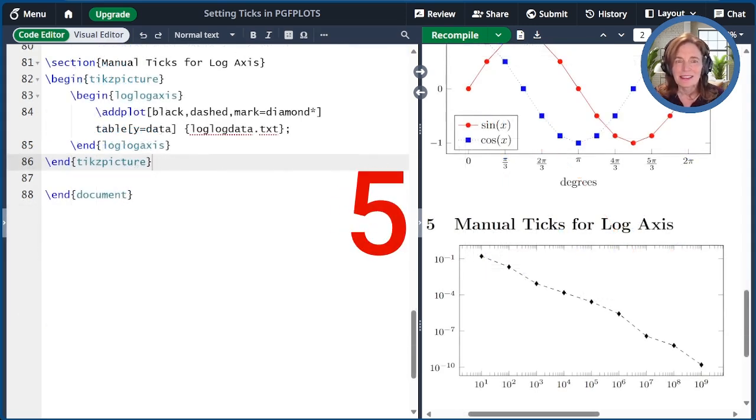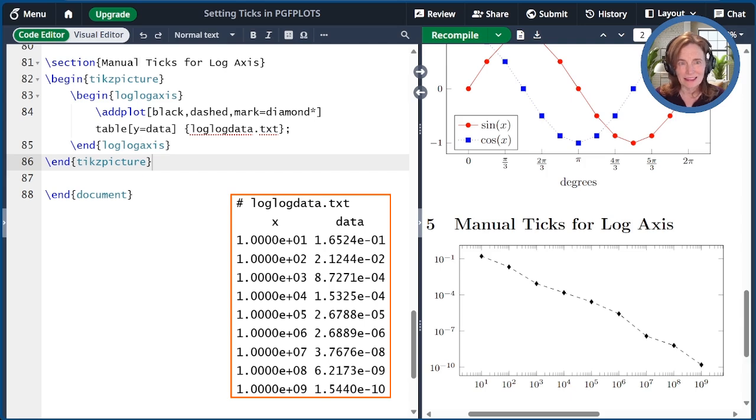The fifth way to set the ticks is a special trick for logarithmic axes. I'm showing here a different plot on log log axes to demonstrate this. Suppose I wanted the ticks to be 10 to the 1, 10 to the 3, 10 to the 5, up through 10 to the 9. How would I do that? Instead of using x tick to change the ticks, there's a command called x tick 10 that requires only the exponents.